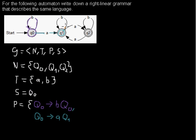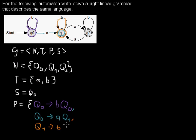The next arc is where we begin in q1 and we read a b and we move to q1. So we are in q1, we read input symbol b, and we move again to q1, giving us the rule q1 → b q1.